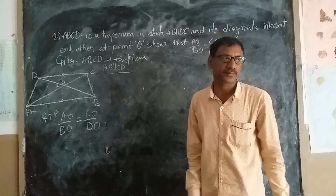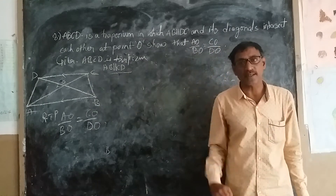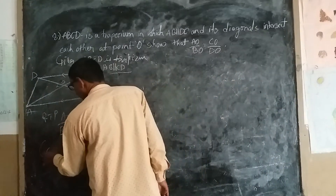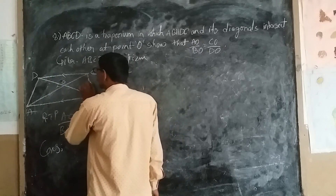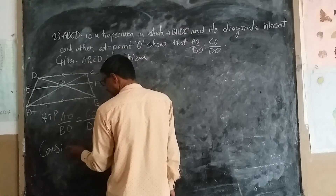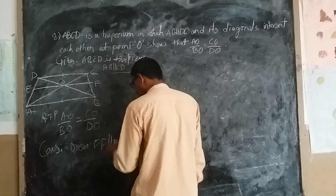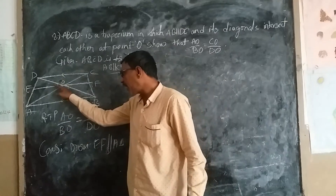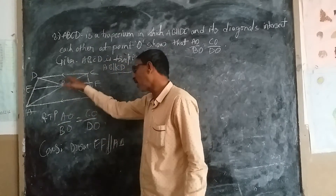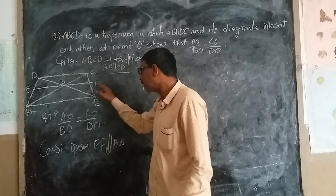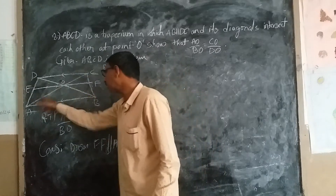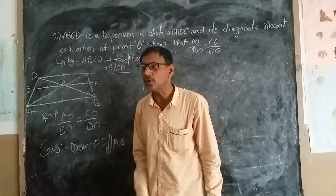If I apply basic proportionality theorem for a triangle, AB is parallel to CD. The construction logic is this: draw a line EF through O such that EF is parallel to AB. Since AB and EF are both parallel to AB, EF is also parallel to CD. This construction passes through O, which is very important.